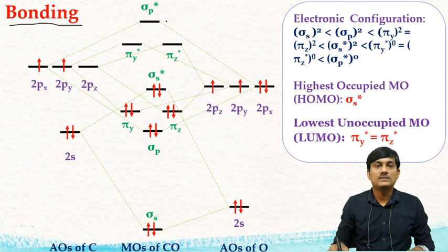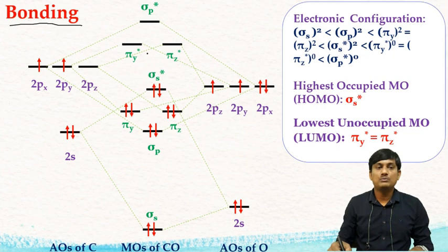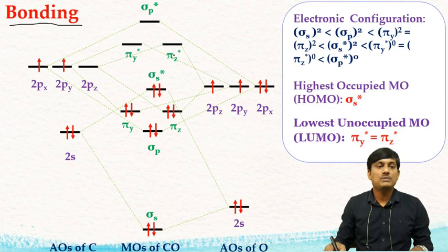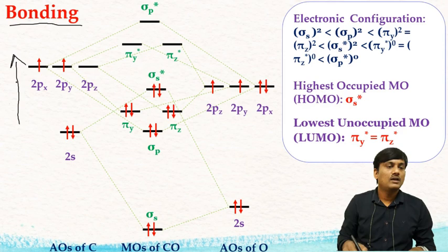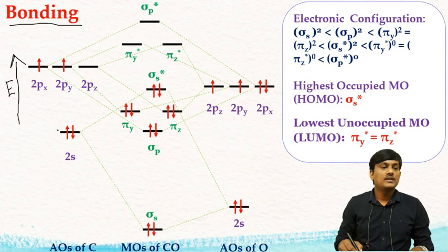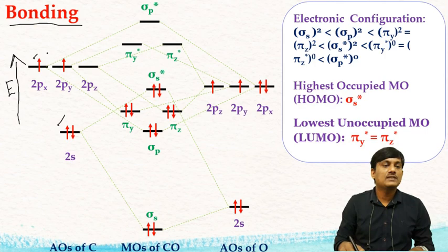In metal carbonyl, carbon monoxide is the ligand. This is the molecular orbital diagram of carbon monoxide. On the left side you have atomic orbitals of carbon, on the right side you have atomic orbitals of oxygen, and in the middle you have molecular orbitals of carbon monoxide. The energy increases upward. The valence electronic configuration of carbon is 2s² 2px¹ 2py¹.